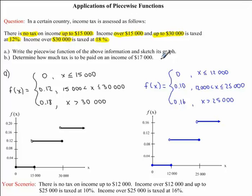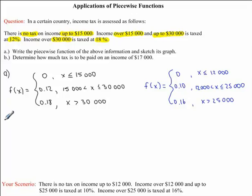Now let's move on to Part B. We have to determine how much tax is to be paid on an income of $17,000. Because we have an income of $17,000, this means we will be in a tax bracket of 12%, because $17,000 falls in between $15,000 and $30,000.